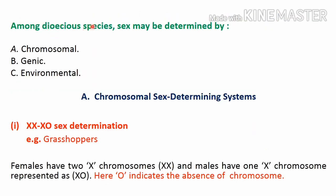Among dioecious species, sex may be determined by three different factors. The first is the chromosomal method or chromosomal cause of sex segregation. The second is the genic — based on genes. The third is the environmental cause of sex segregation. We will first take the chromosomal sex determining system, where sex segregation is based on different types of chromosomes present in separate male and female individuals.